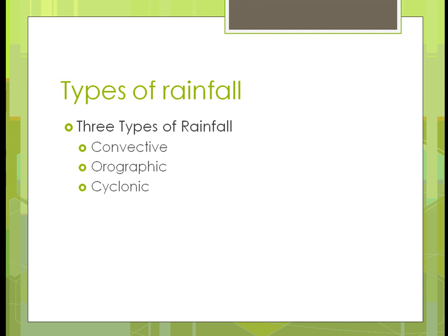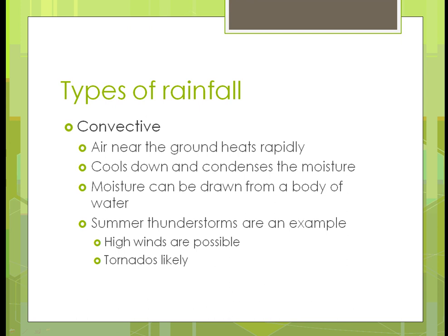In terms of rainfall, it's categorized as three different types: convective, orographic, and cyclonic. The most common one in most areas is convective, where air near the ground heats rapidly, cools down, and condenses the moisture — when it gets heavy enough it starts dropping and that becomes the moisture. You can also get it from a body of water if you're close to a lake or ocean. During the summer, common examples are summer thunderstorms, and that's when you can also get things like tornadoes and high winds.